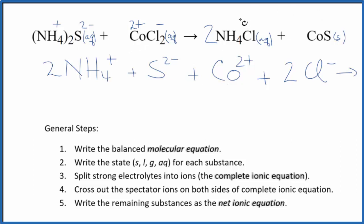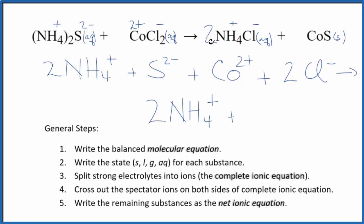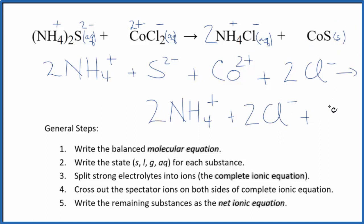For the products, the ammonium ion is 1 plus and the chloride is 1 minus. We have 2 ammonium ions just like in the reactants, and the 2 applies to everything, so 2 chloride ions as well. For net ionic equations, we don't split solids apart, so we're just going to write cobalt 2 sulfide. This is the complete ionic equation.